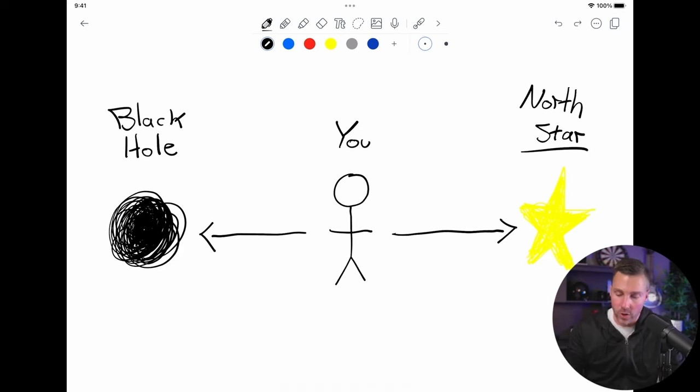We're going to call this the North Star. Essentially, what this is, is some kind of guiding light at the end that is guiding all of your direction. It's pushing you in the right direction, making sure you're making the right choices that are in alignment with where you want to go.